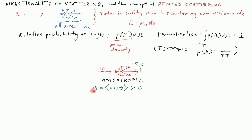We can think about a beam that passes through a material that scatters light this way and ask how that beam's intensity falls off with propagation distance. The beam starts with intensity I-naught, and as it passes through a scattering material with absorption, the total loss is given by exponential decay: e to the minus (mu_a plus mu_s) times x.